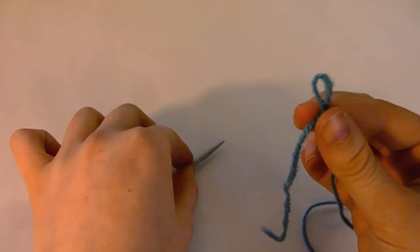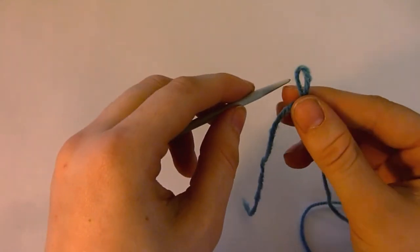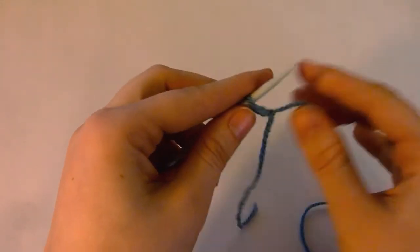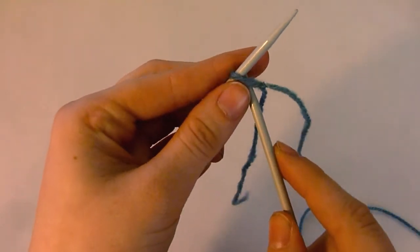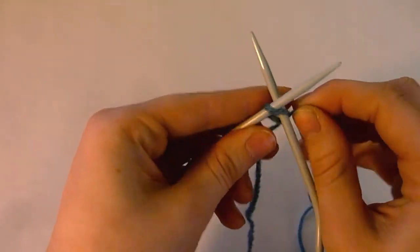So you've got your loop and you're going to stick your left hand needle through it and your right hand needle through the loop under the left hand needle and tighten that up.